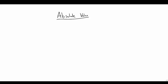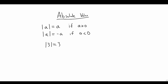Let's explore absolute value and specifically its geometric meaning. The definition: the absolute value of a real number a is a itself whenever a is positive or zero, and the absolute value of a is negative a when a is negative. For example, the absolute value of three is three. The absolute value of negative six — since negative six is less than zero — is negative of negative six, which is positive six. And the absolute value of zero is zero.